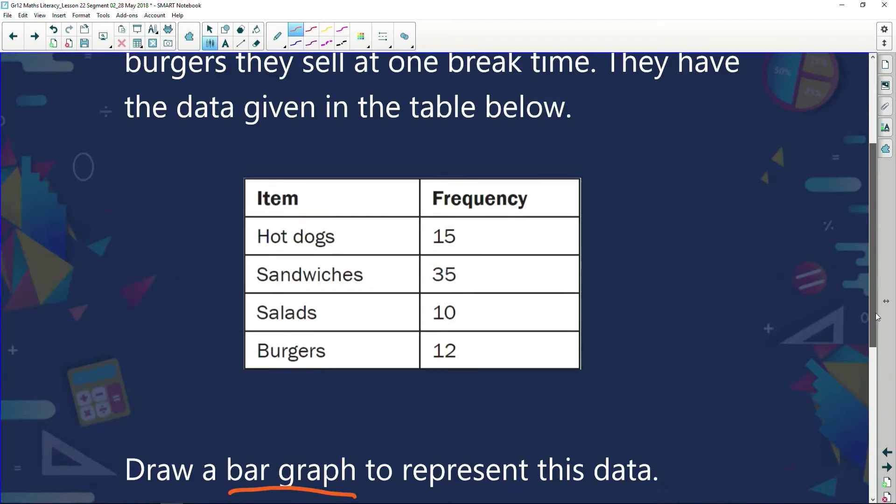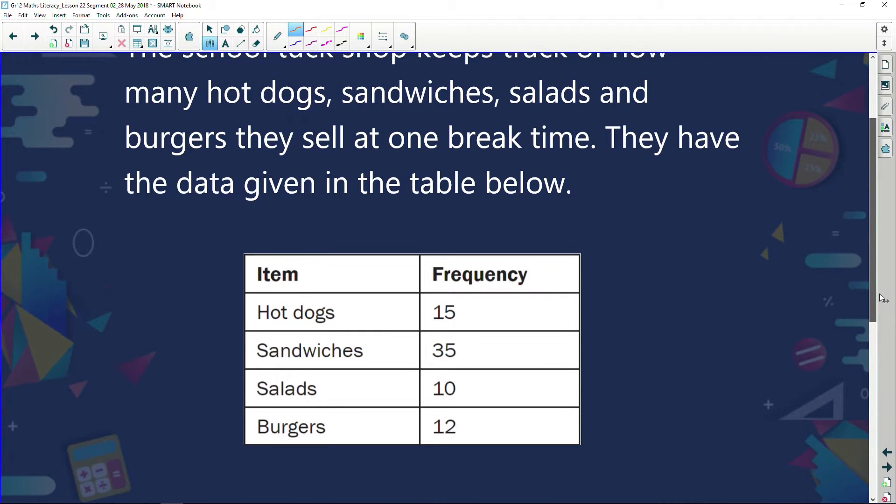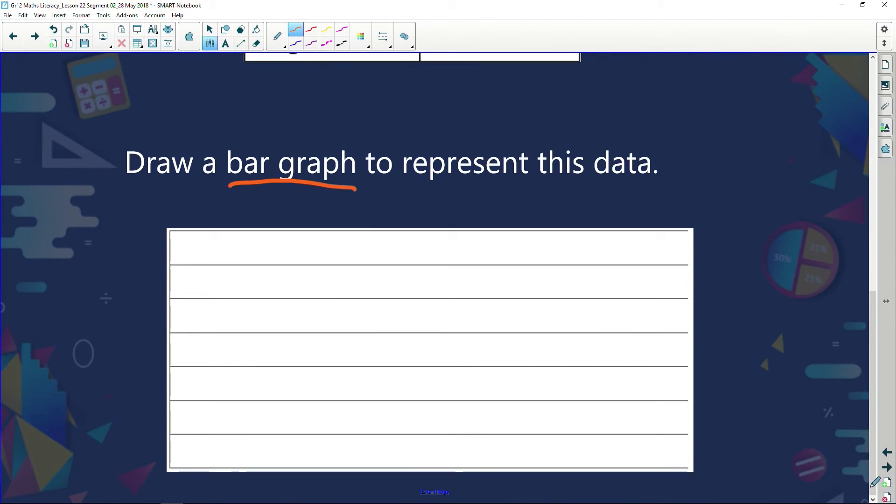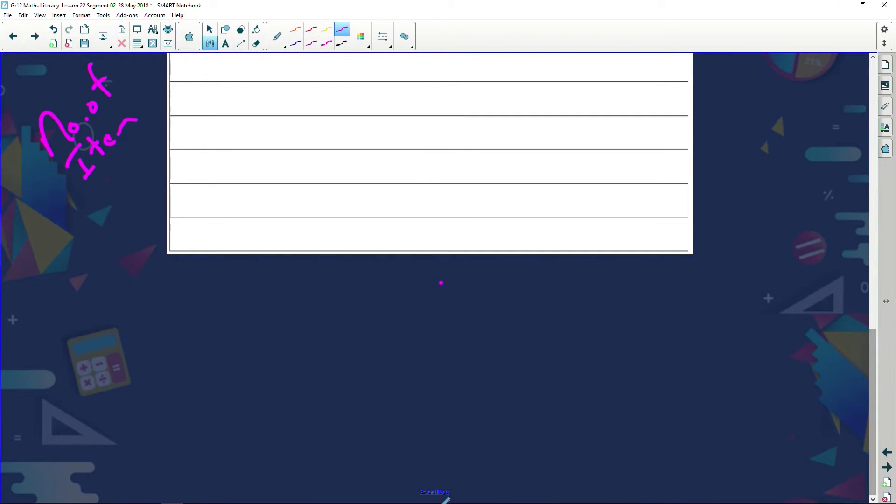So here we go. So the first thing my graph is going to say is got to have a heading. And what's the heading going to be? It's going to be items sold at our tuck shop. So let's write that down here. I'm going to say items sold at the tuck shop. Then here I've got the number of items. And here I'm going to say it's the type of food.